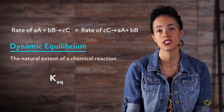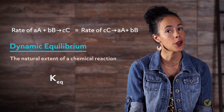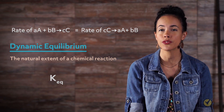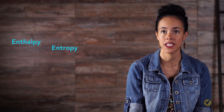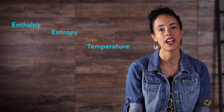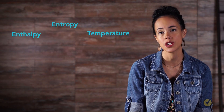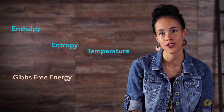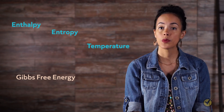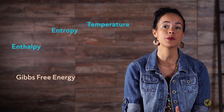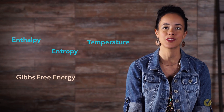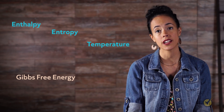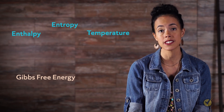The system arrives at this ratio of reactants and products through a careful balancing act between enthalpy, entropy, and temperature, simplified as a relationship with the standard free energy change of the system, known as Gibbs free energy. Once the system arrives at equilibrium, it will stay at this happy balance, unless we disturb it. How the system reacts to disturbance is what Le Chatelier's Principle answers.